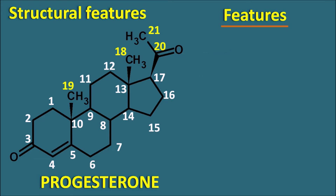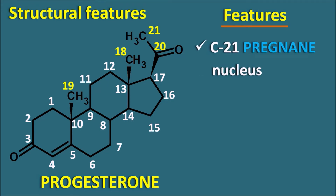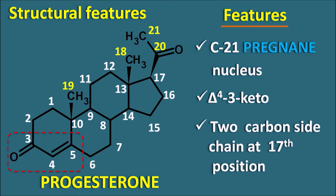Progesterone has a C21 pregnane nucleus. Just like the androgens, we can also observe a delta-4-3-keto — a keto group at the third position and a double bond at the fourth position. Along with this, there is a two-carbon side chain at the 17th position, resulting in the 21-carbon nucleus.